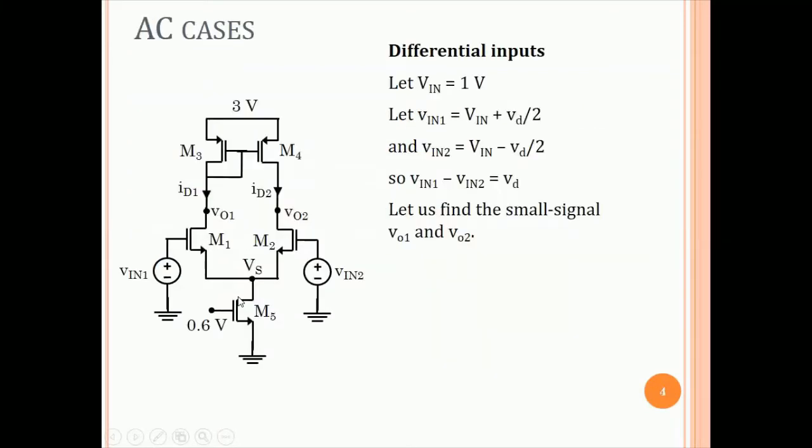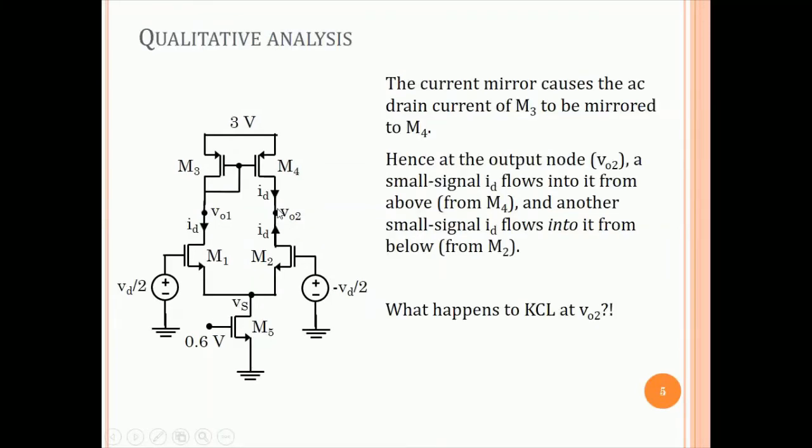Let us discuss the AC cases. We apply differential inputs plus VD by 2 here, minus VD by 2 here, so that Vin1 minus Vin2 is VD and we want to find VO1 and VO2. Now, at least looking at this circuit, it looks like there is no more symmetry in the circuit because one is diode connected. Clearly, the Thevenin's resistance at this node is different than the Thevenin's resistance at this node. So, let us draw the small signal circuit.